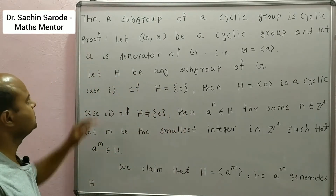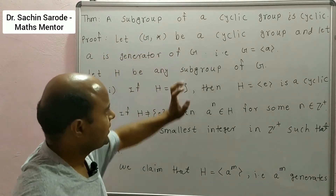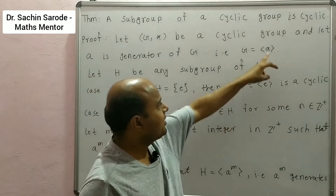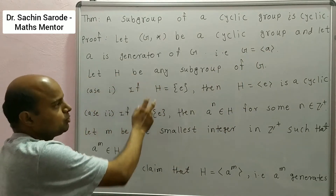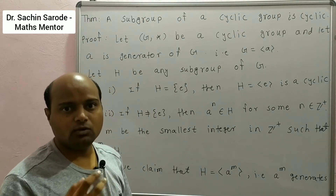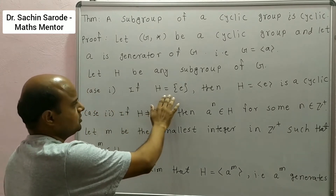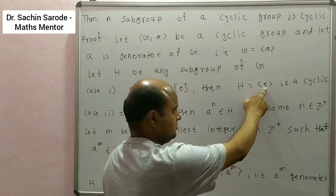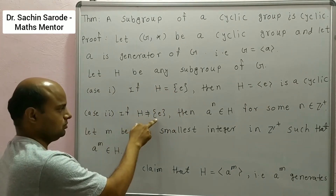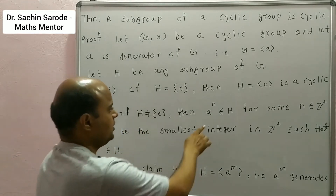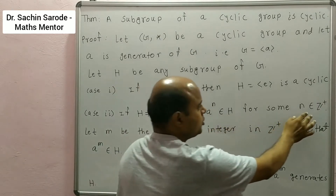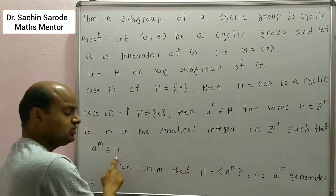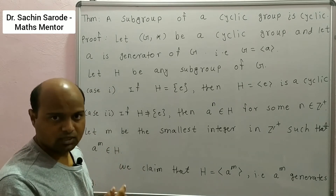We will see the proof of this result. Let G* be a cyclic group and let A be a generator of G, that is G is a group generated by A. Let H be any subgroup of G. We have to show H is also cyclic. We have two cases. First case: if H = {e}, then clearly H is a cyclic group and it is generated by e. If H is not equal to {e}, then we must have A^N belonging to H for some positive integer N. Let M be the smallest positive integer such that A^M is in H.